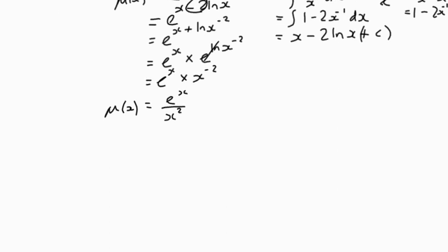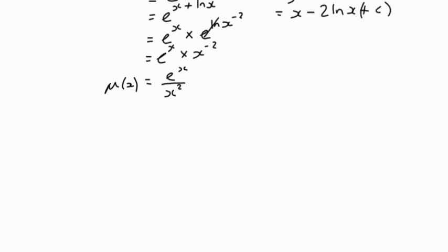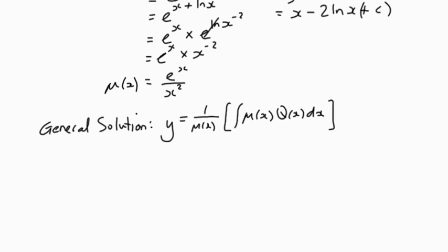So that's us got our integrating factor. The next thing we can do is actually work out the function itself. We're going to work out a general solution. The rule that we've got is that the general solution y is equal to 1 over μ(x) multiplied by the integral of μ(x)Q(x)dx.